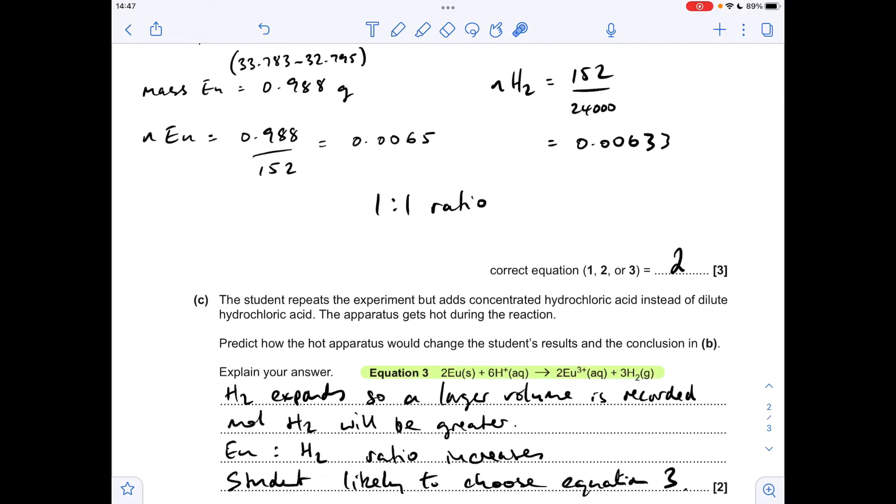Now what we've already said is enough to get those two marks but the question could have added an extra mark and said which equation is the student likely to go for? Well it's going to be equation three because that's got a higher europium to hydrogen ratio.